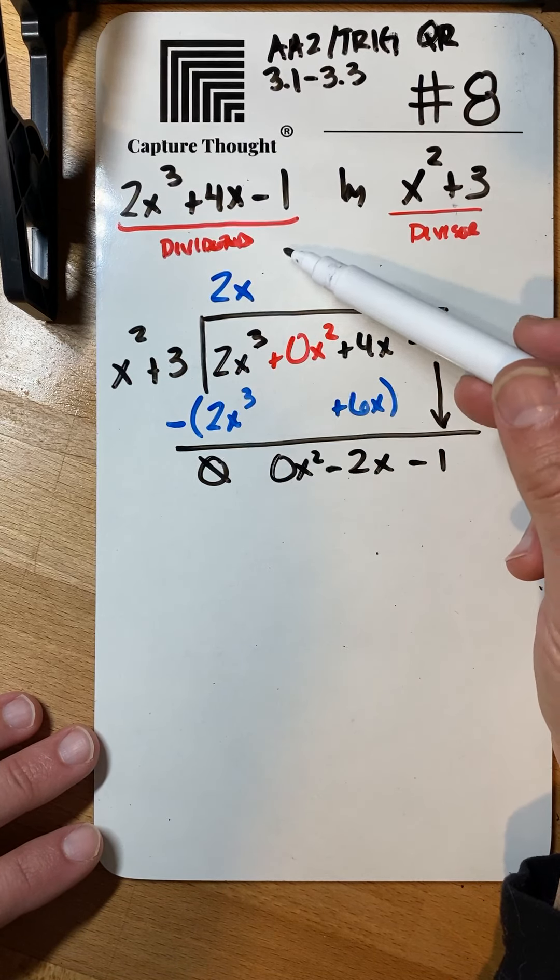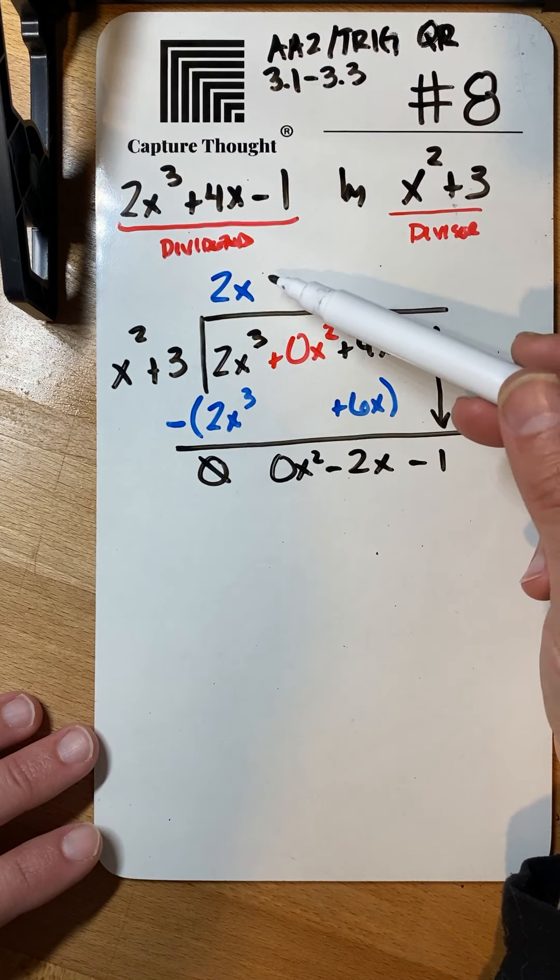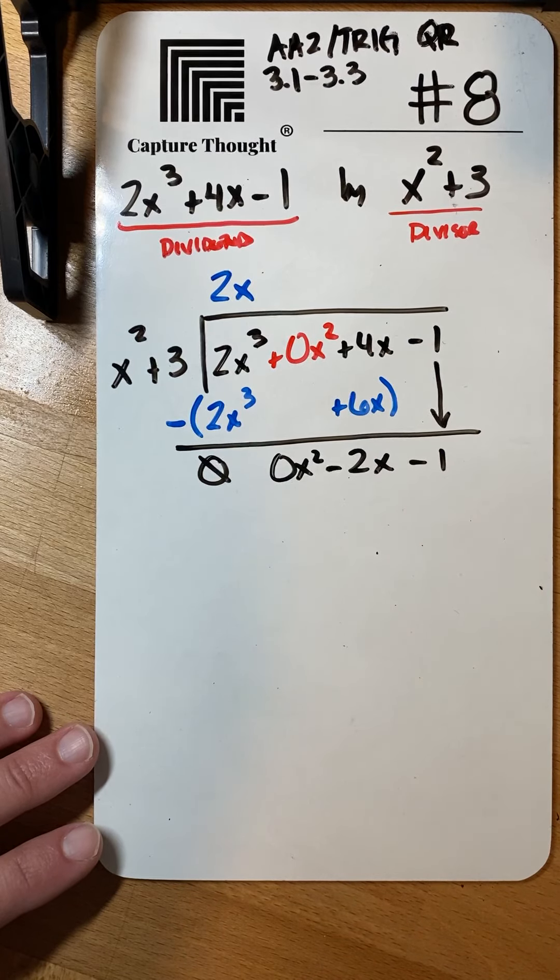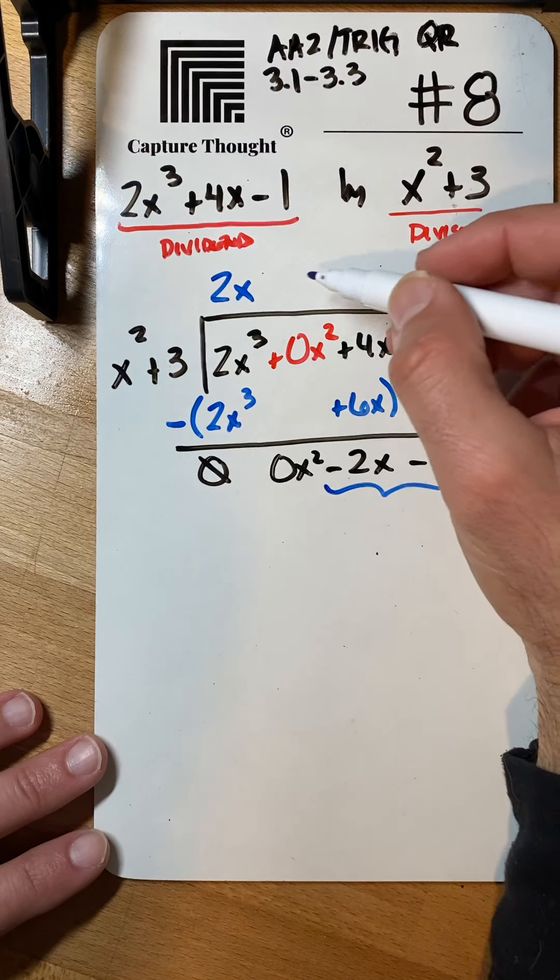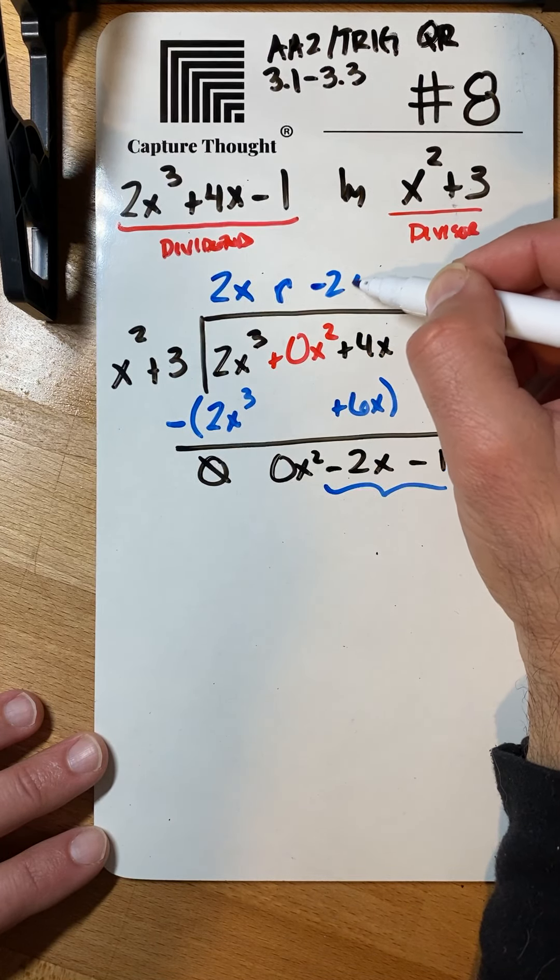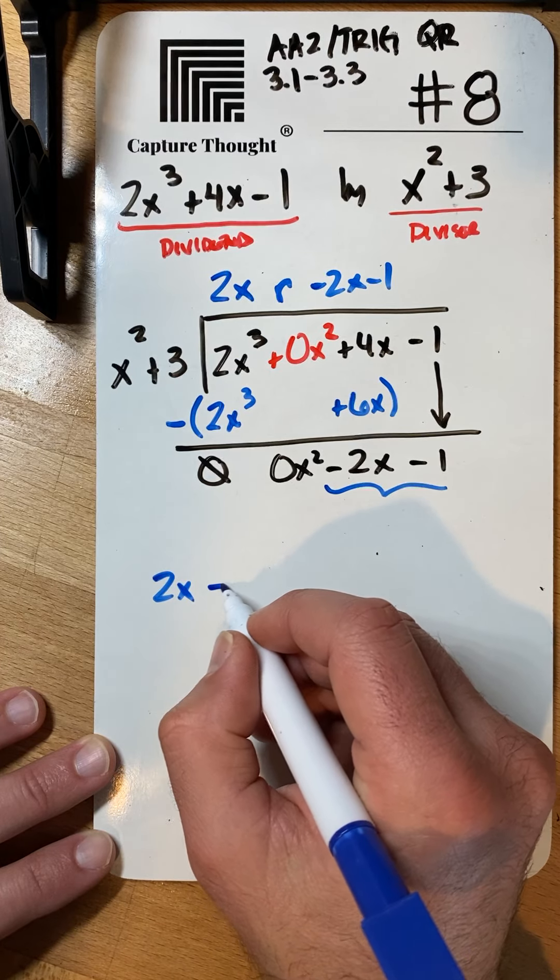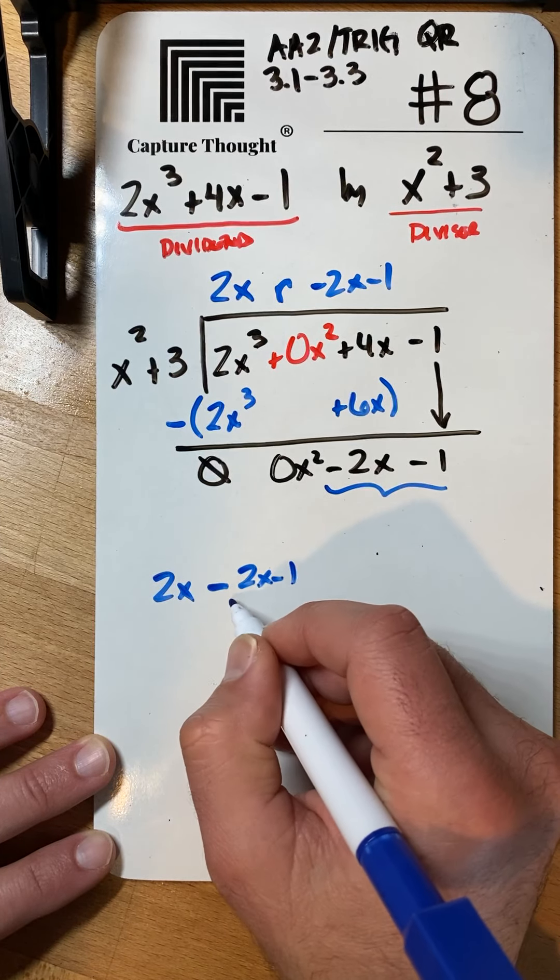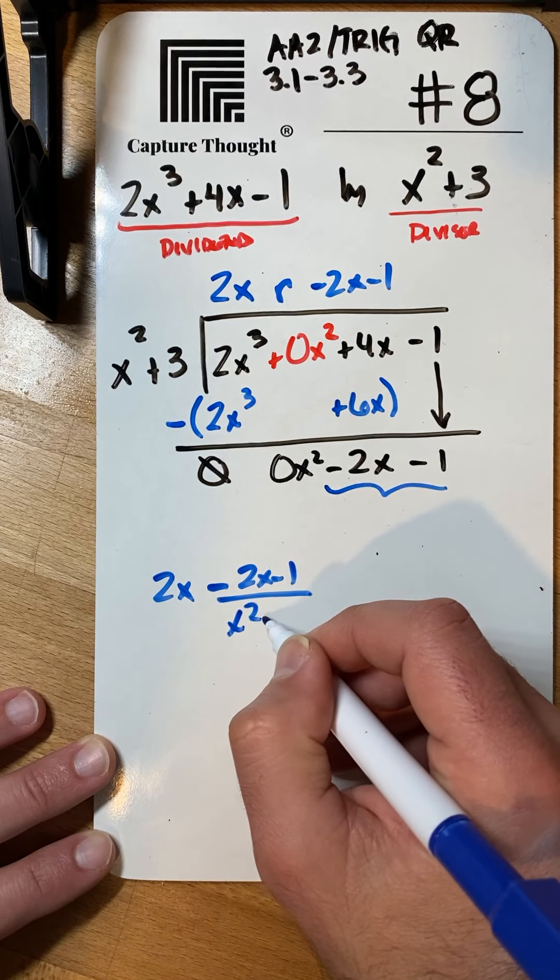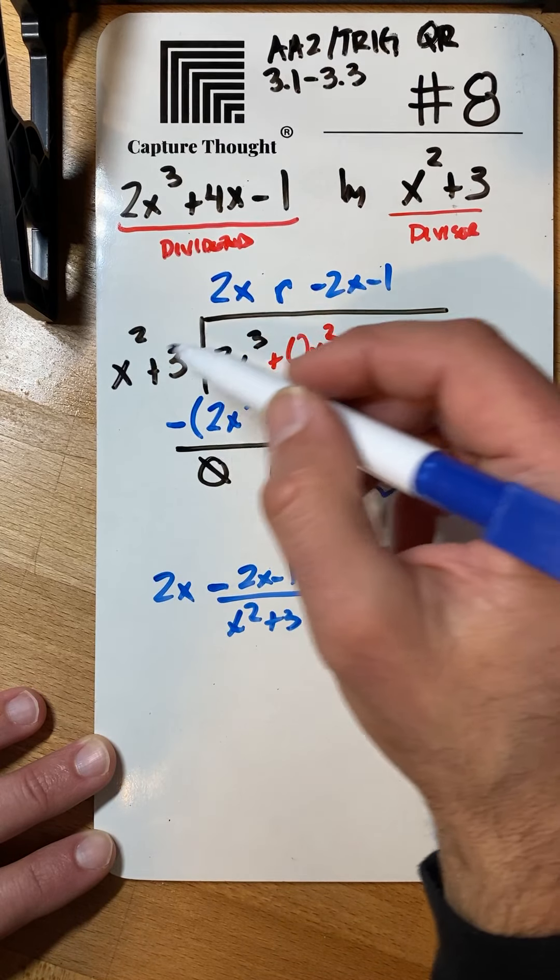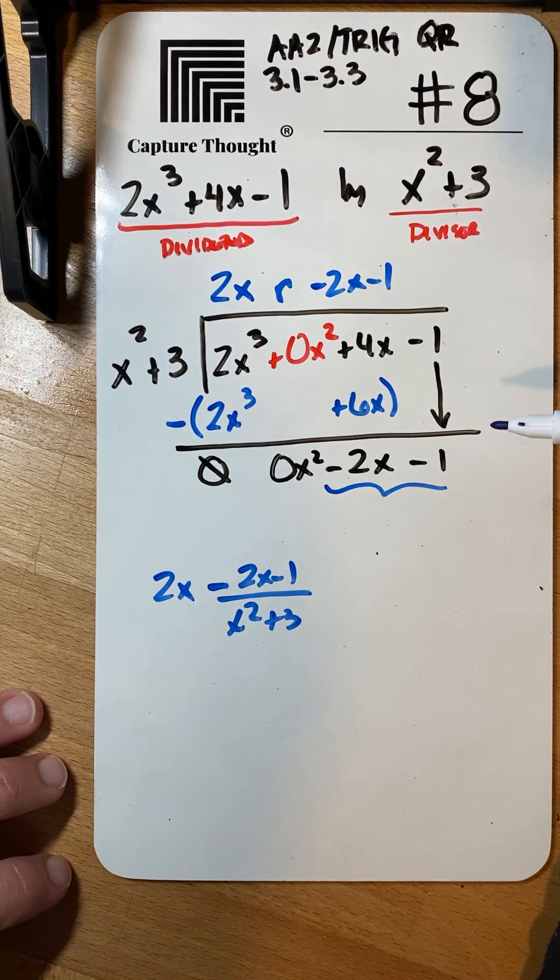So will x squared go into zero x squared? It'll go zero times. But if I play this out, I'm just going to have this as my remainder. So my remainder is just negative two x minus one. But the correct way to actually write this thing, it would be the answer is two x minus two x minus one over x squared plus three. So it's basically the remainder divided by your divisor.